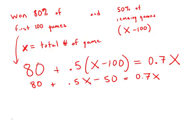I subtract 80 and 50. I get 30 plus 0.5x equals 0.7x. Subtract 0.5x from each side.